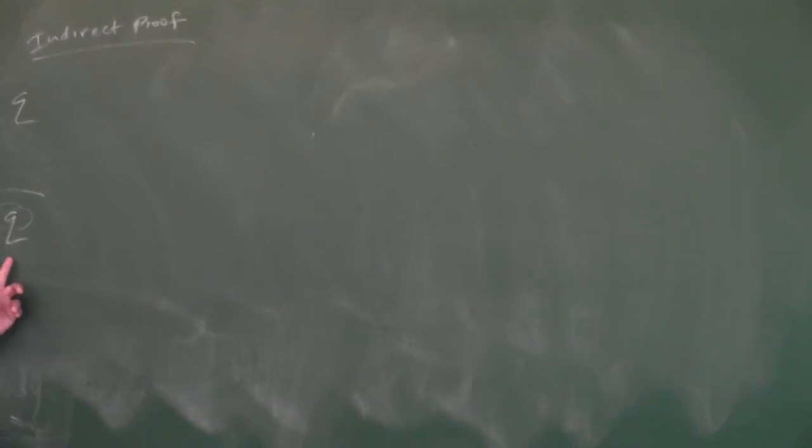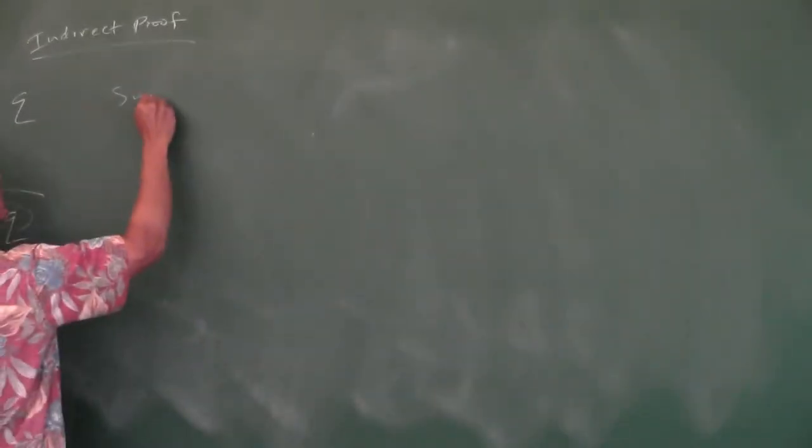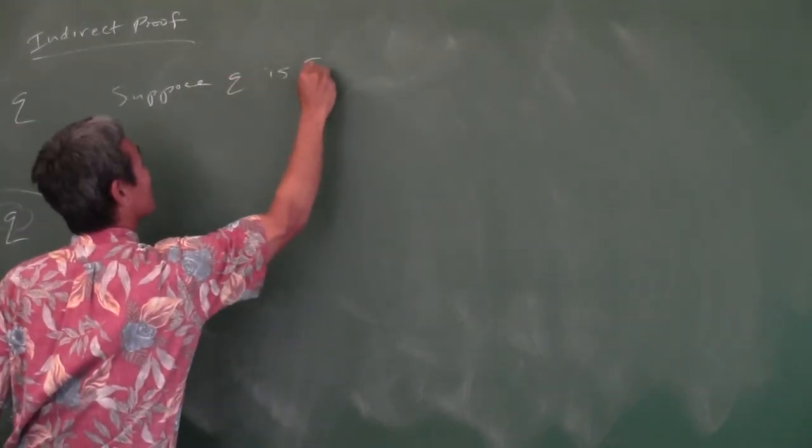But now we've got the third method: indirect proof. You have to understand what makes a valid argument — if these premises are true, then the conclusion will be true as well. In an indirect proof, we're going to suppose that the conclusion is false and then work toward a contradiction.